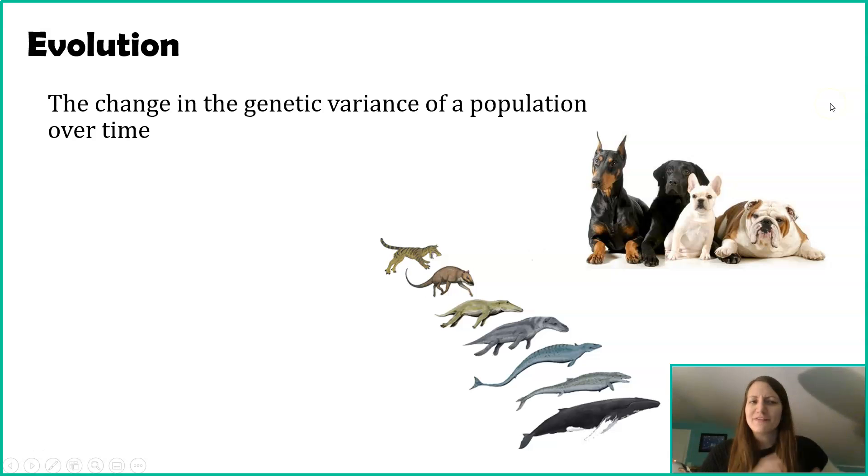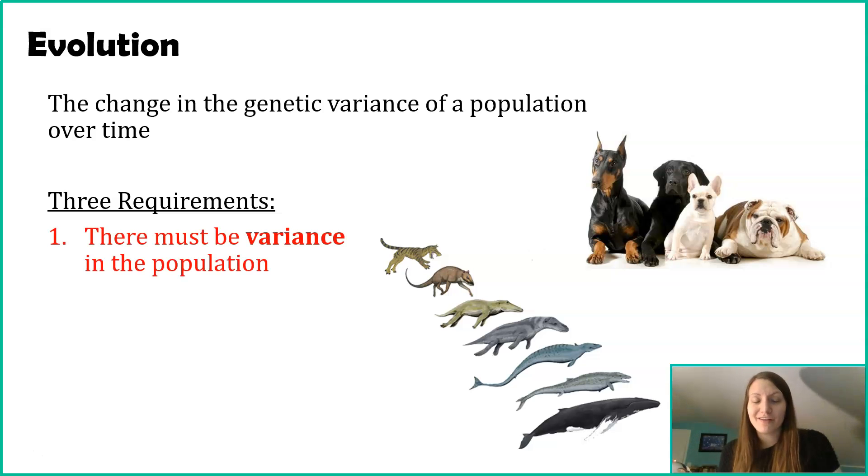When we're thinking about evolution, you have seen this definition before. It's the change in the genetic variance of a population over time. So let's actually break down this definition and you can see what we need in order for evolution to happen. There's three general requirements. First, there's got to be variance in the population.